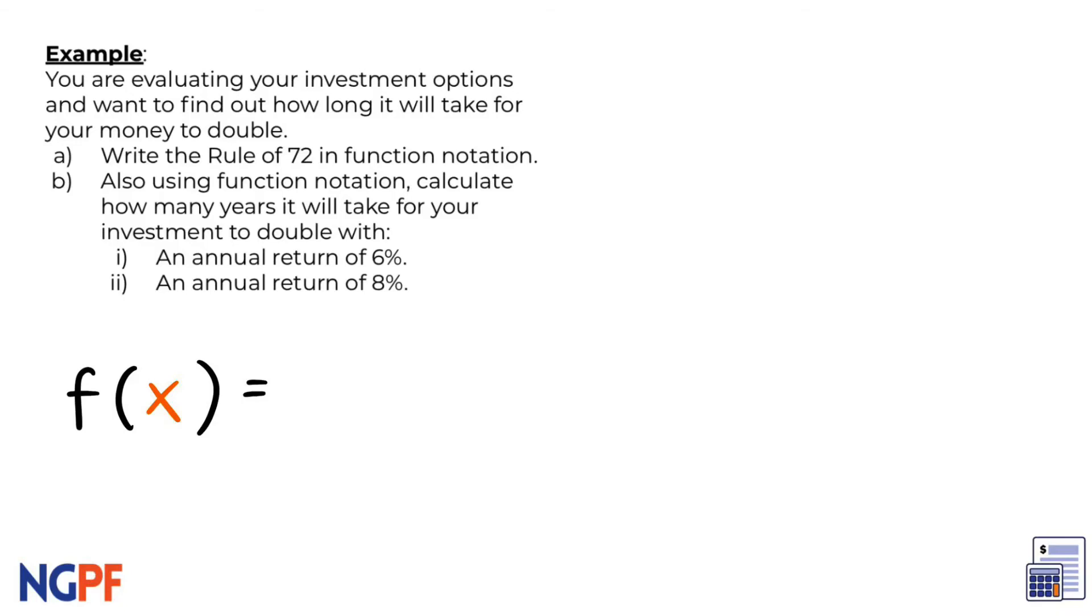Nice work! The function notation of the Rule of 72 looks like f(x) = 72/x. Now that we have our function, we are asked to calculate how many years it will take for your investment to double with these values in question b in for x.